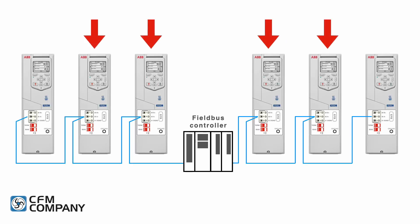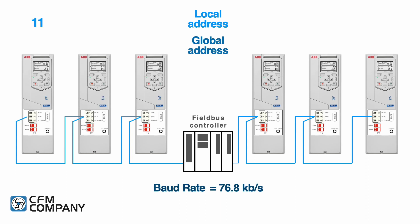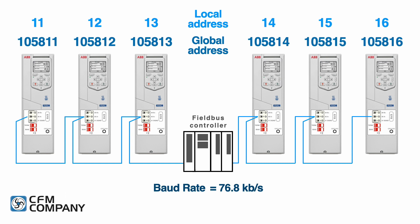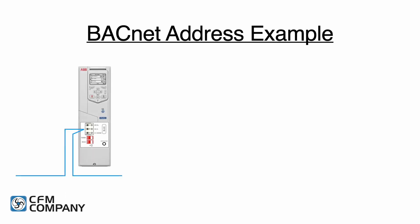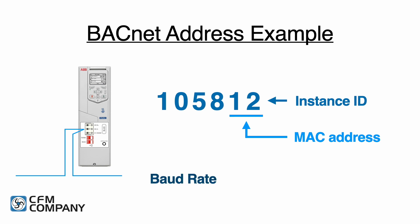If the drive is not at the end of the network, both the term and bias switches should be off. Each device on the network requires a unique MAC address and instance ID. Ask the building automation contractor for a list of addresses for all of the drives on the project. You will also need to know the network baud rate. For this video, we will use the instance ID of 105.812, where the last two digits of the instance ID is also the MAC address. The network baud rate will be 76.8 kilobits per second.